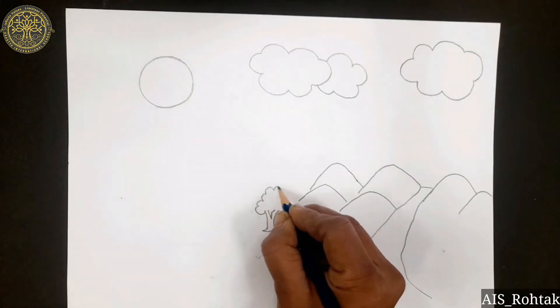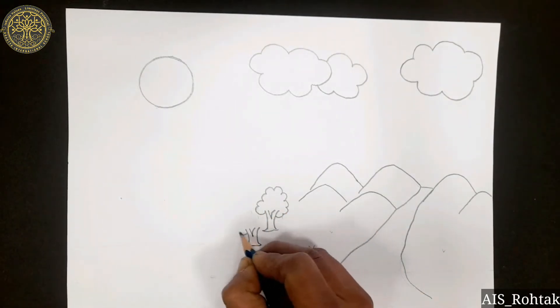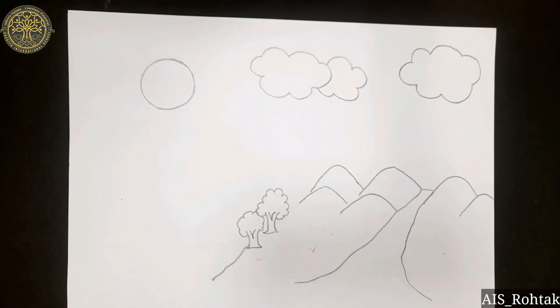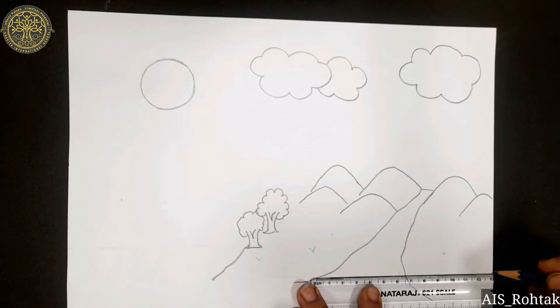After that, we will draw small trees. Now draw two horizontal lines in this way.